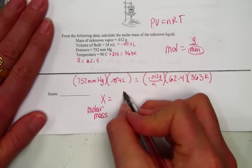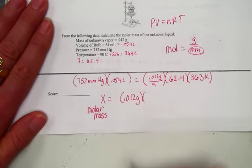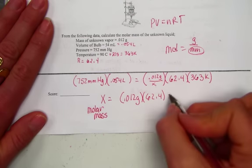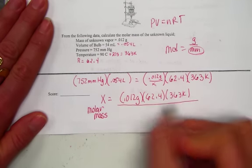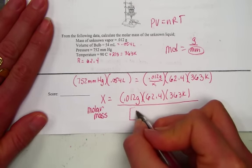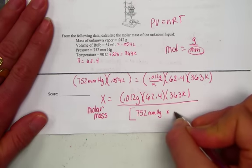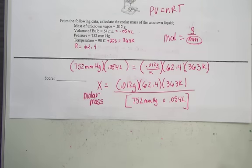The molar mass will be found by taking the grams, 0.012, the constant 62.4, the temperature 363 K, over P times V in parentheses, 752 and 0.054 liters, all under the gRT over PV for molar mass.